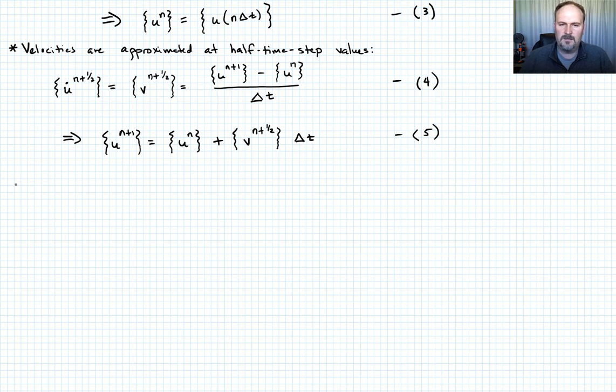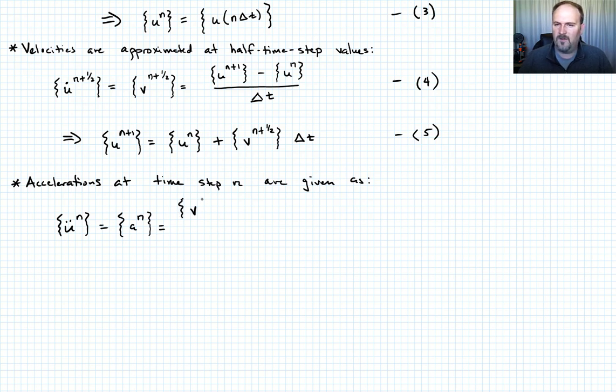Accelerations at some time step n are given as follows. We'll say u double dot at n. That's just our acceleration vector. Call it a at time step n. And that's going to be equal to our velocity vector n plus 1 half minus the velocity vector at n minus 1 half divided by delta t. Let's call that equation 6.